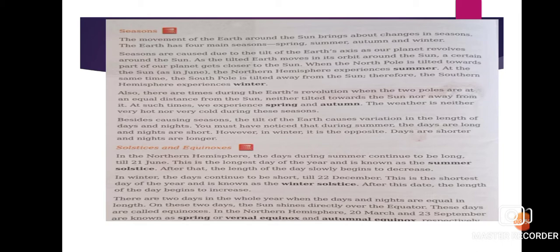Now, solstices and equinoxes. In the northern hemisphere, the days during summer continue to be long until 21st June — this is the longest day of the year and is known as the summer solstice. After that, the length of the day slowly begins to decrease. In winter, the day continues to be short until 22nd December — this is the shortest day of the year and is known as the winter solstice.